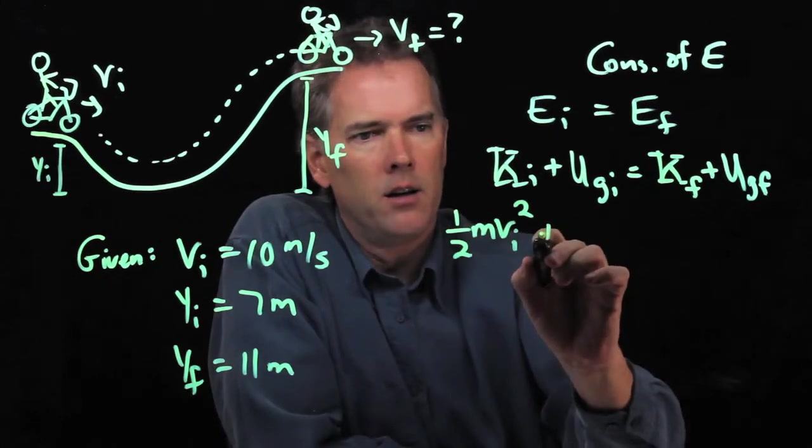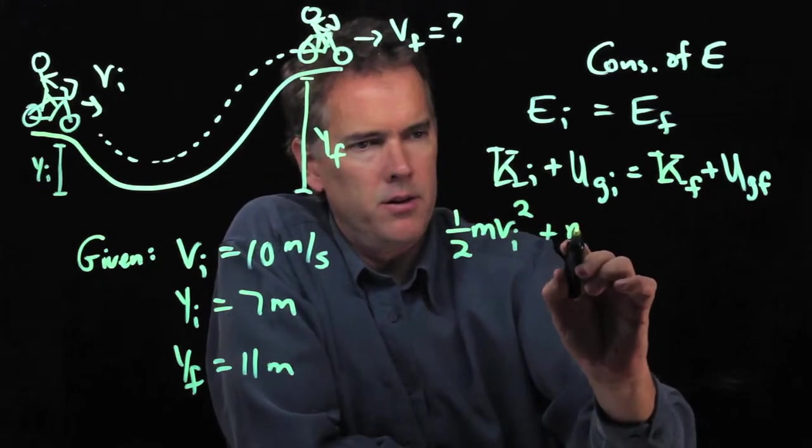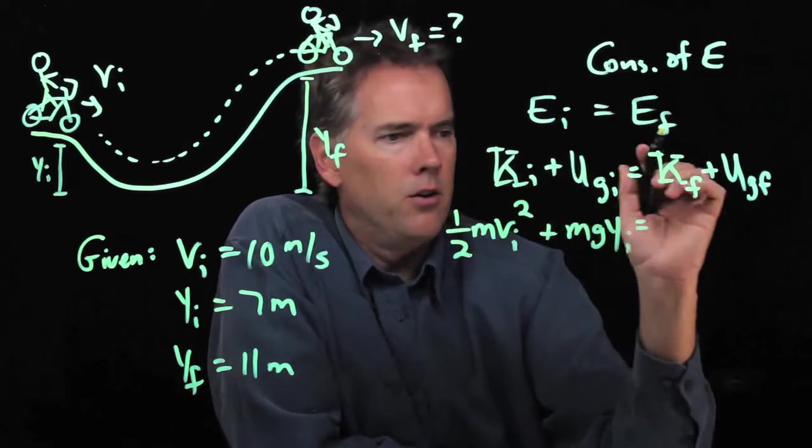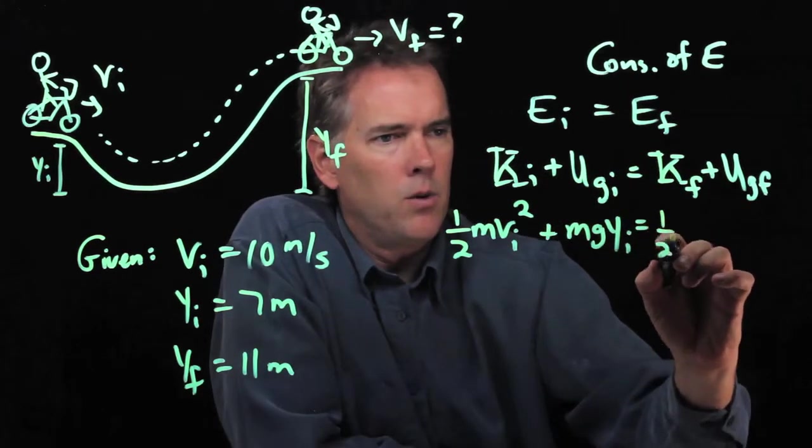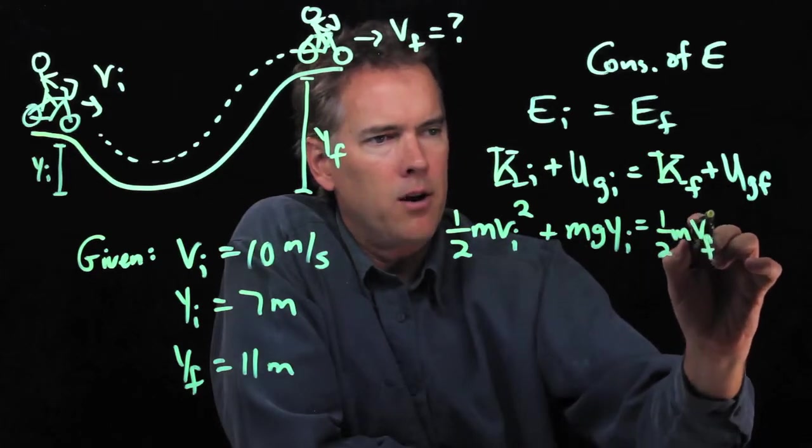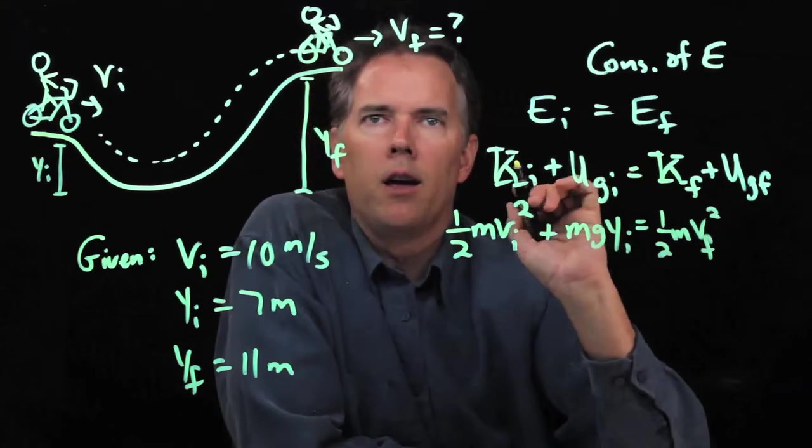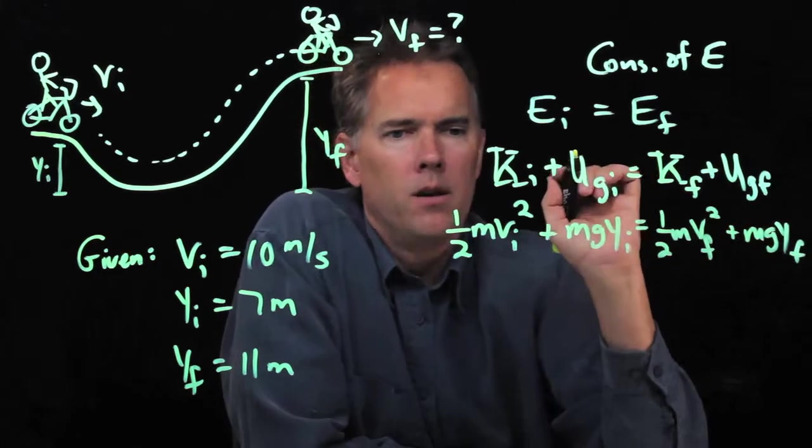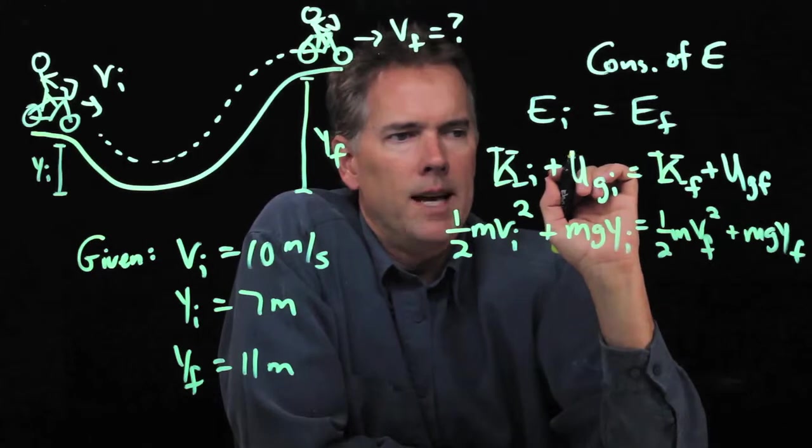Gravitational potential energy is mg y initial. Kinetic energy finally is one half mv squared, and now it's Vf, and gravitational is mg y final. All right, let's solve this thing for Vf. That's what we're looking for.